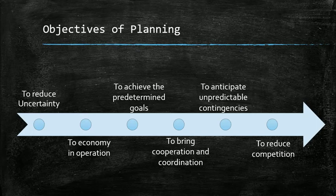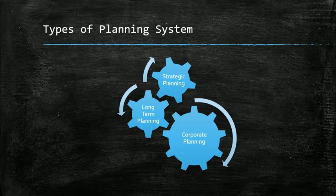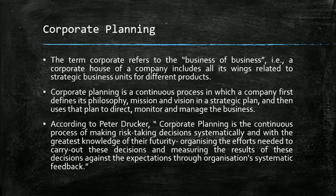Once you've finalized the objective part, you need to know which type of planning you will be involved in. There are basically three types: corporate planning, long-term planning, and strategic planning. In coming videos, you will find sessions on strategic and long-term planning, but in this session we will be working on corporate planning.